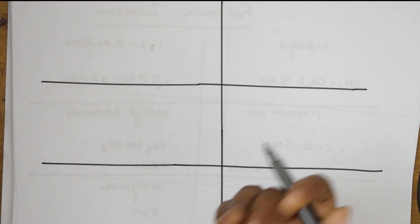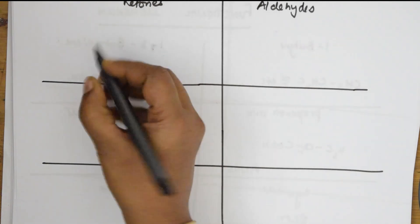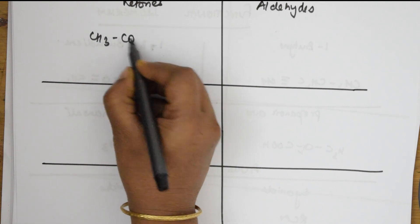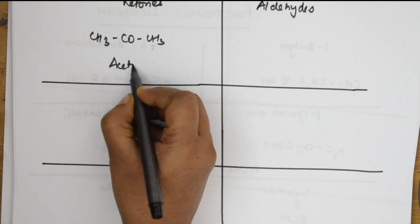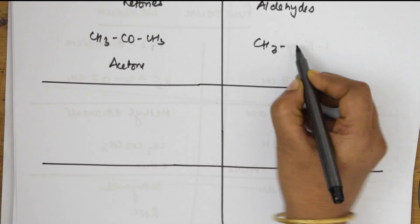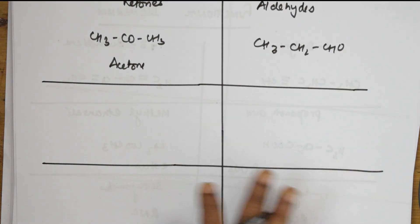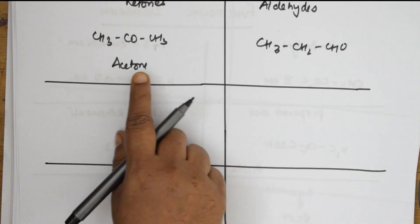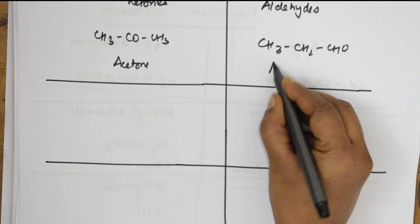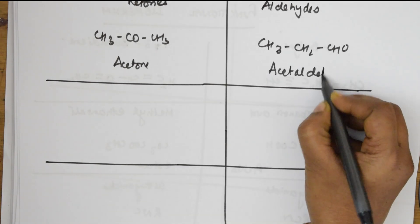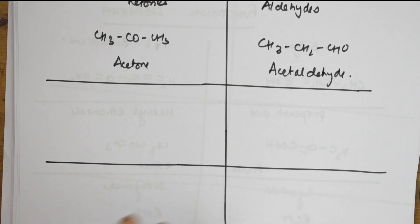Ketones are functional isomers with aldehydes. For example, acetone (CH3-CO-CH3) has 3 carbons and a ketone functional group. It is isomeric with acetaldehyde (CH3-CHO), which also has 3 carbons but an aldehyde functional group. So the molecular formula is the same in both cases, but the functional groups differ.